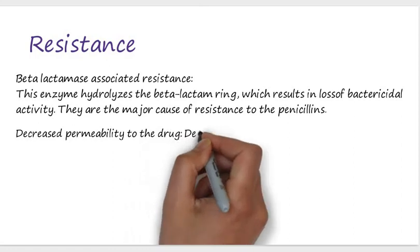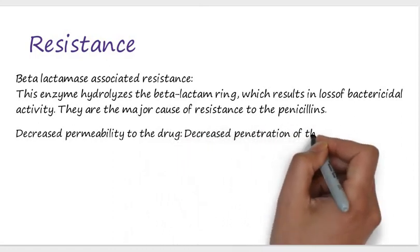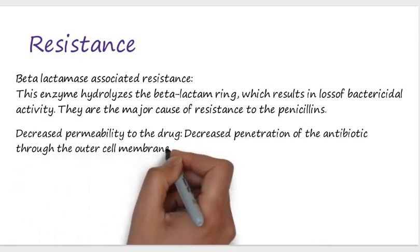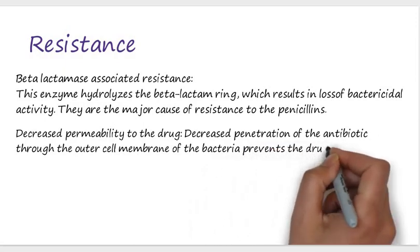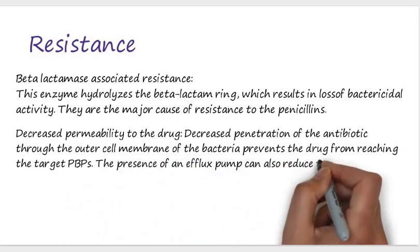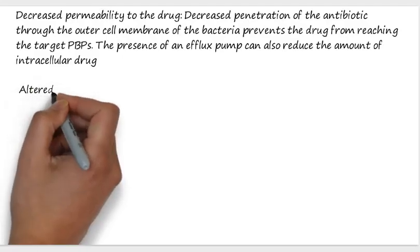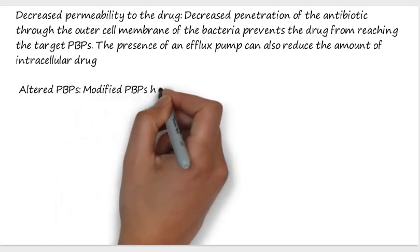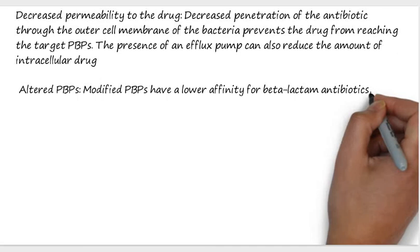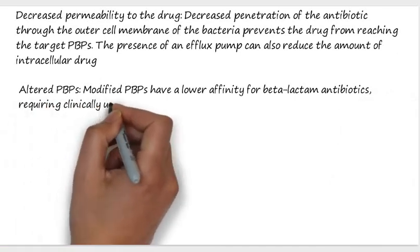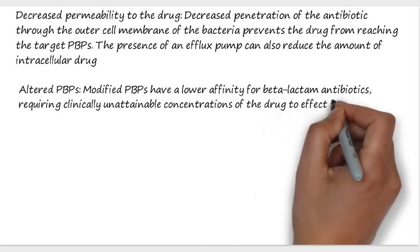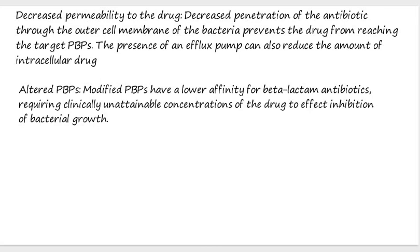The second resistance mechanism is decreased permeability to the drug. Decreased penetration of the antibiotic through the outer cell membrane of the bacteria prevents the drug from reaching its target site, which is the penicillin binding protein. The presence of an efflux pump can also reduce the amount of intracellular drug. The third mechanism is altered penicillin binding proteins — modified PBPs have a lower affinity for beta-lactam antibiotics, requiring clinically unattainable concentrations of penicillin to achieve inhibition of bacterial growth.